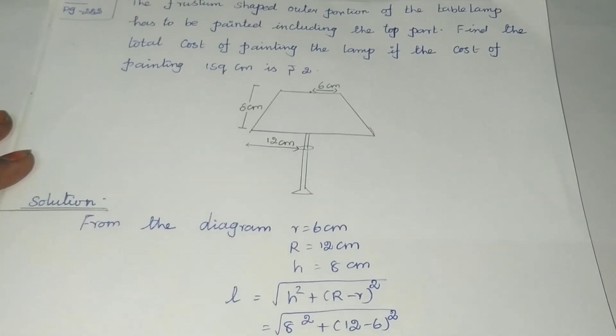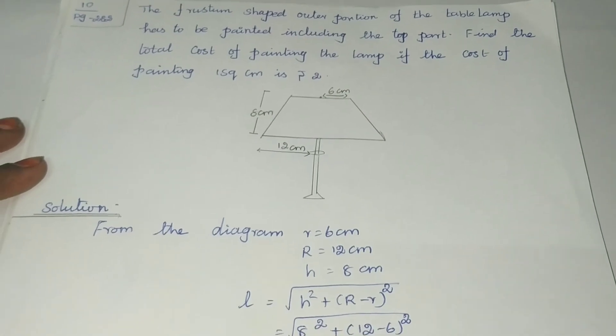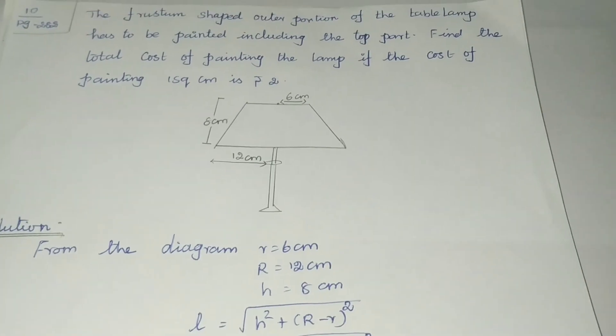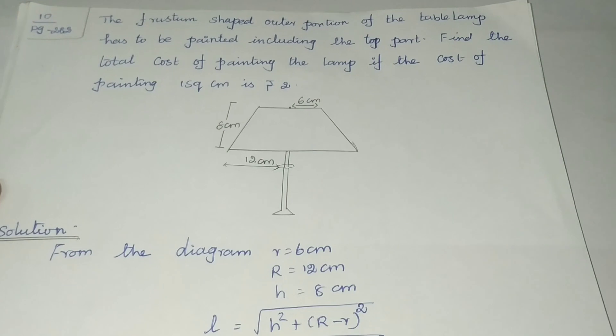Page number 282: The frustum-shaped outer portion of the table lamp has to be painted including the top part. Find the total cost of painting the lamp if the cost of painting 1 square centimeter is rupees 2.